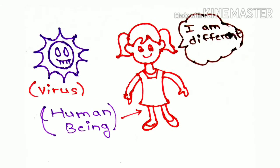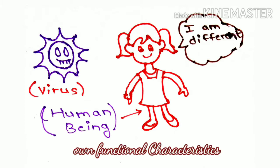Each type of life, from the simplest virus to the most complicated human body, has their own functional characteristic.